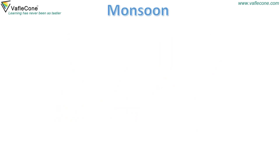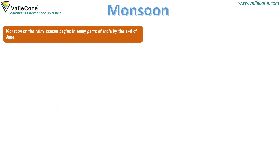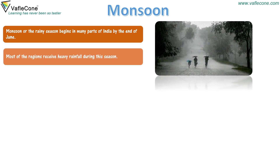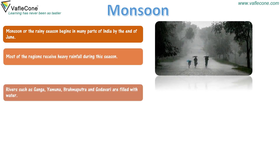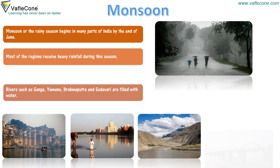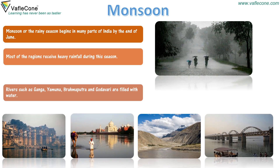Monsoon, or the rainy season, begins in many parts of India by the end of June. Most of the regions receive heavy rainfall during this season. Rivers such as Ganga, Yamuna, Brahmaputra, and Godavari are filled with water.